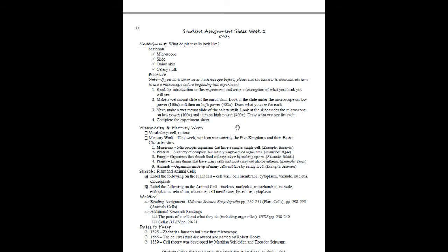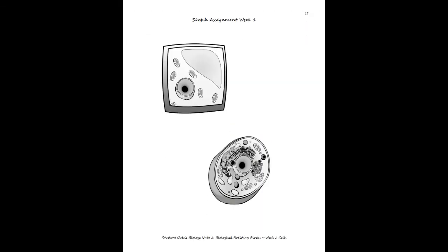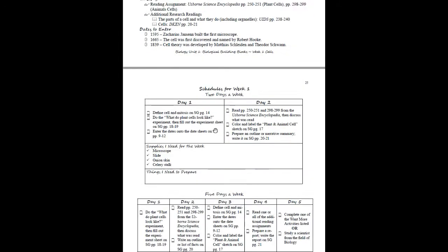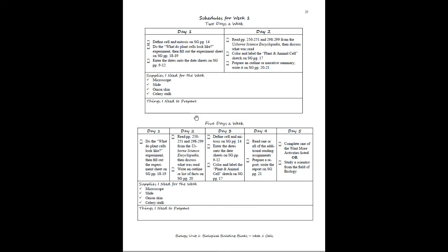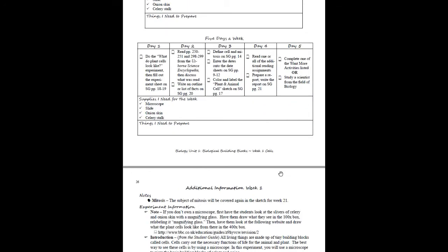In the student guide, the next thing the student will see is a blank sketch. In the teacher's guide, the next thing you'll see is two optional schedules: a two-days-a-week schedule and a five-days-a-week schedule. These two schedules have the same information for the most part, except there will be more activities scheduled in the five-days-a-week version. Basically you'll cover everything in two days or you'll cover everything in five days.